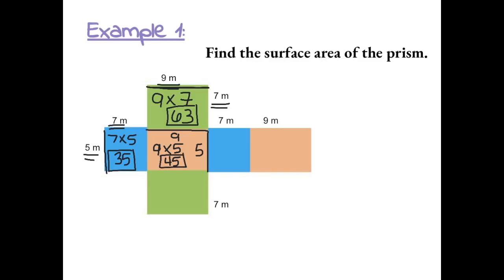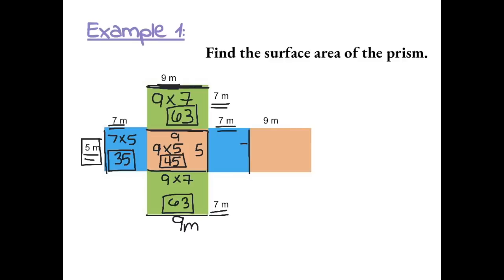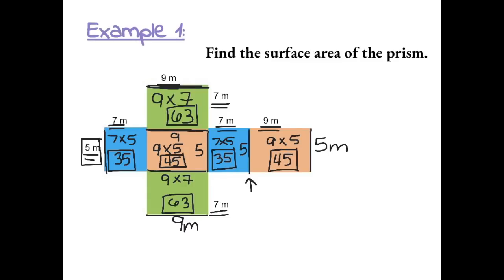Down here we have a green box with dimensions 7 and 9 meters, so the area is 9 times 7, which is 63. The blue box has dimensions 7 and 5, so 7 times 5 gives us 35. The last box is 9 meters by 5 meters, so 9 times 5 gives us 45. Now to find the total surface area, we add up all of our areas.